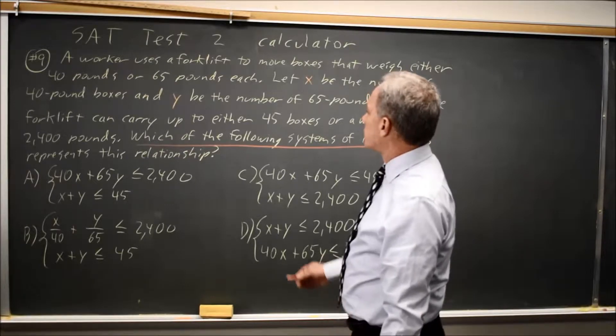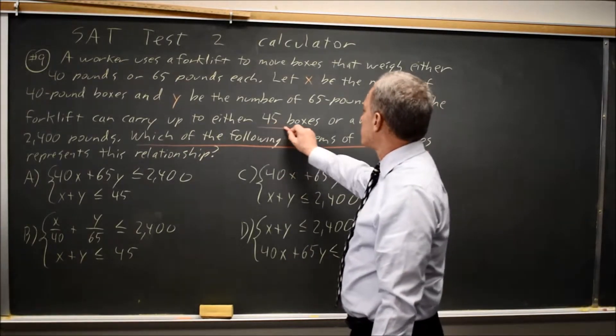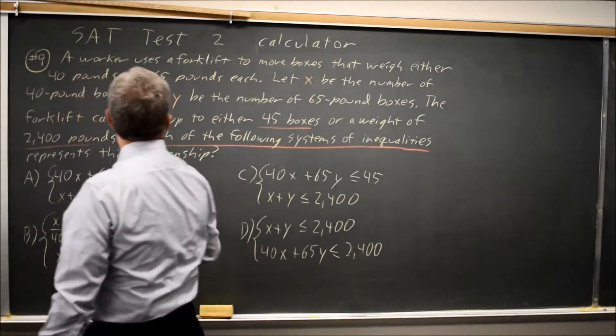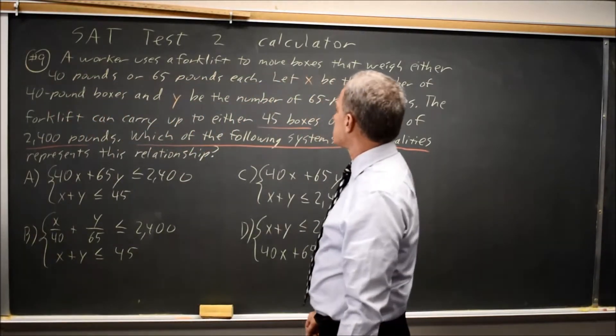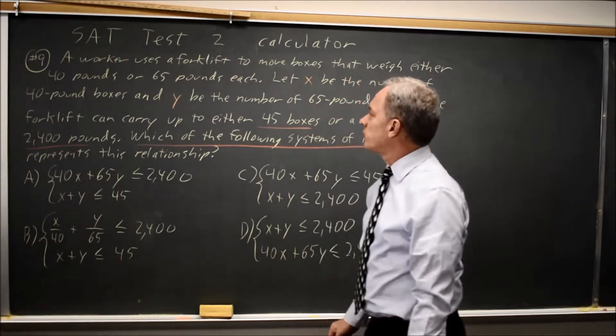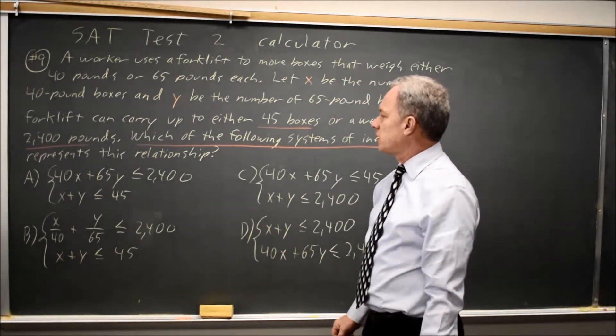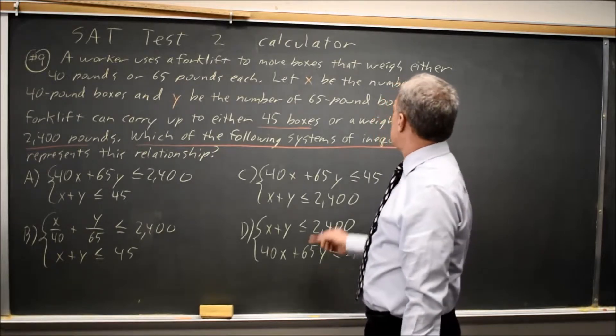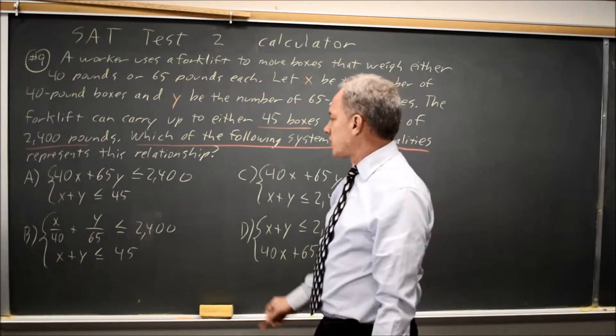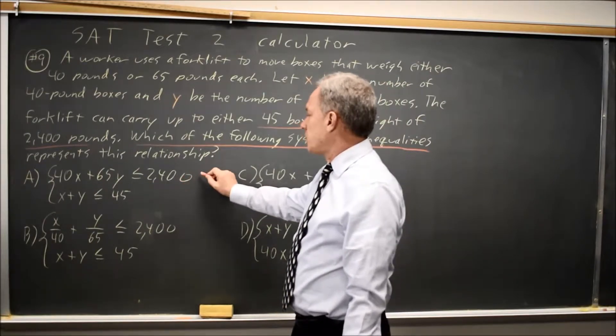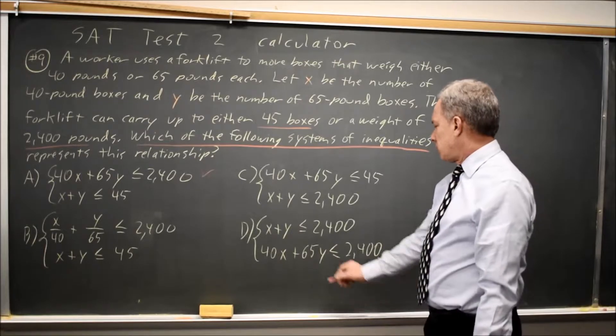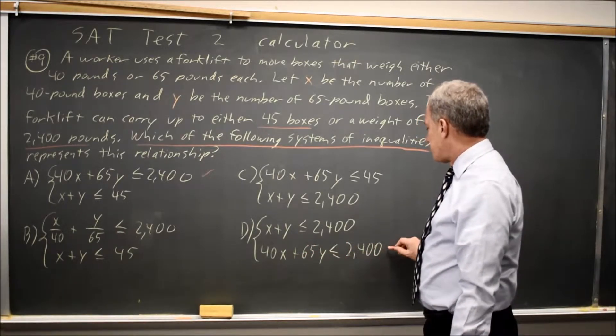We're told a forklift can carry up to 45 boxes or a weight of 2400 pounds, where X is the number of 40-pound boxes and Y is the number of 65-pound boxes. So the total weight would be 40X plus 65Y, and you want that to be up to 2400 pounds. So that would be 40X plus 65Y less than or equal to 2400.